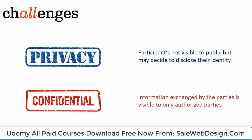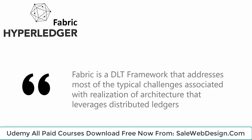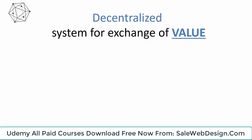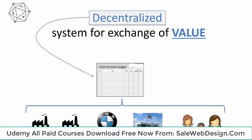Confidentiality refers to ensuring that only authorized parties have visibility into the transactions. Another set of challenges associated with DLT implementation are scalability, interoperability, and standardization. Hyperledger Fabric is a DLT framework that addresses most of the typical challenges associated with distributed ledgers. The decentralization is achieved by way of the distributed ledger — a ledger shared by all participants in the business. The asset created by the manufacturer is added to the ledger, and anytime the ownership changes, it is recorded in the ledger as a transaction.